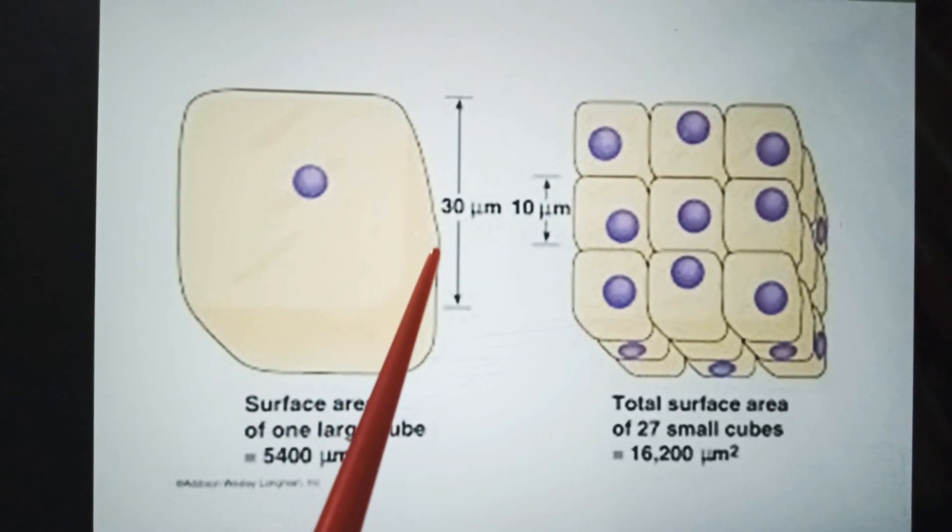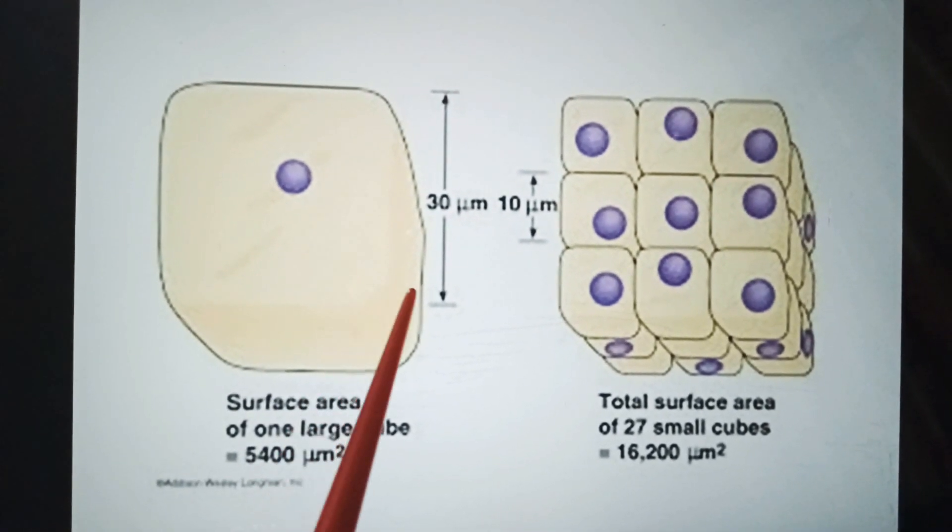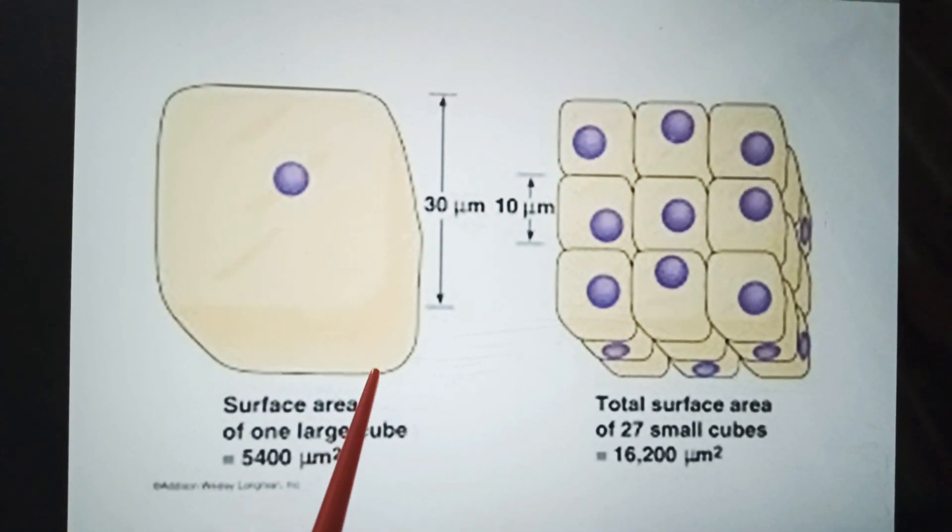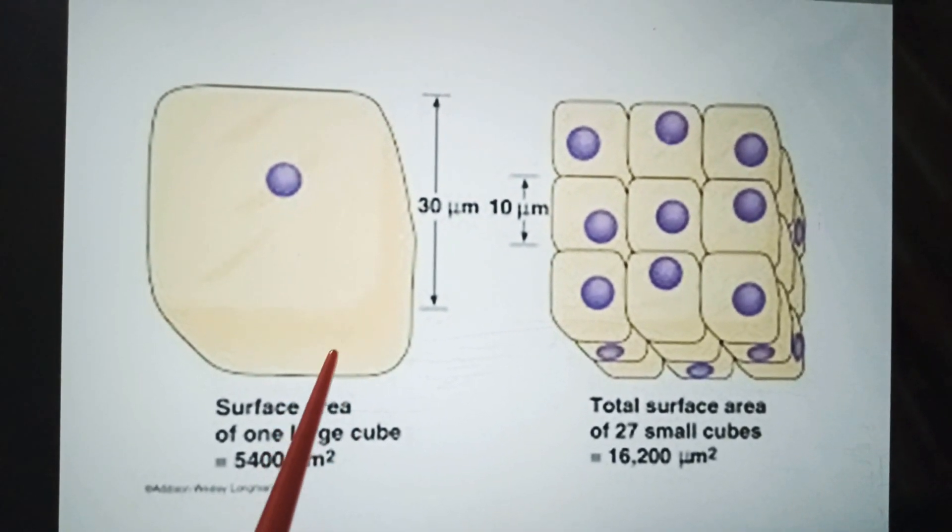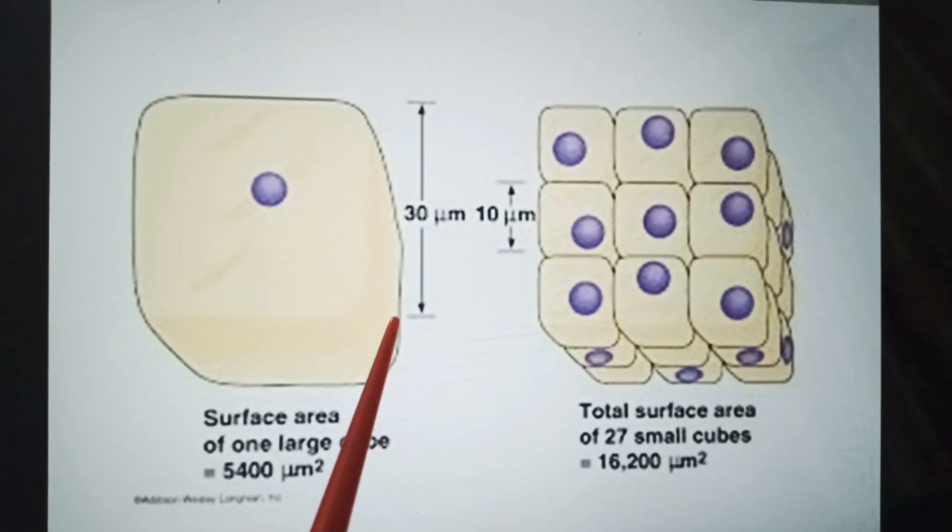This figure shows one large cell and 27 small cells. In both cases, the total volume is same.